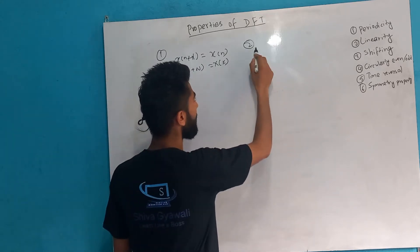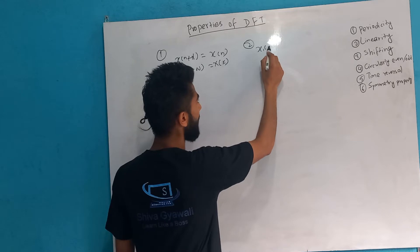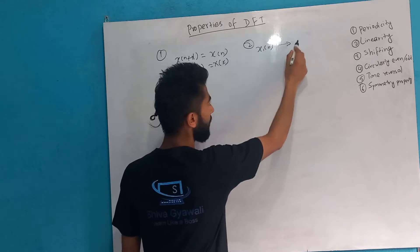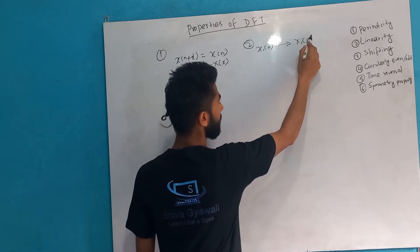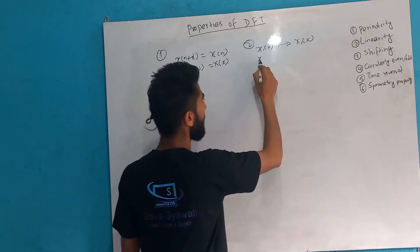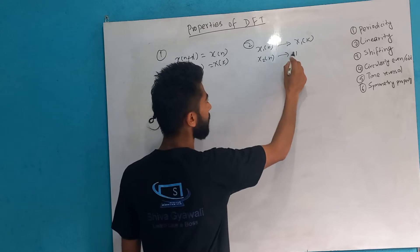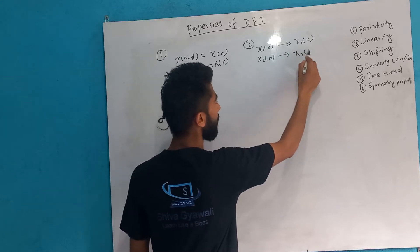So what do we know about DFT? x1 is equal to DFT of x1, and x2 is equal to DFT of x2.